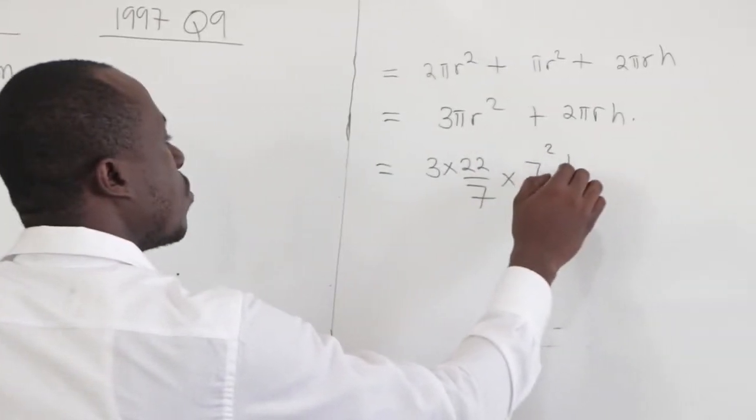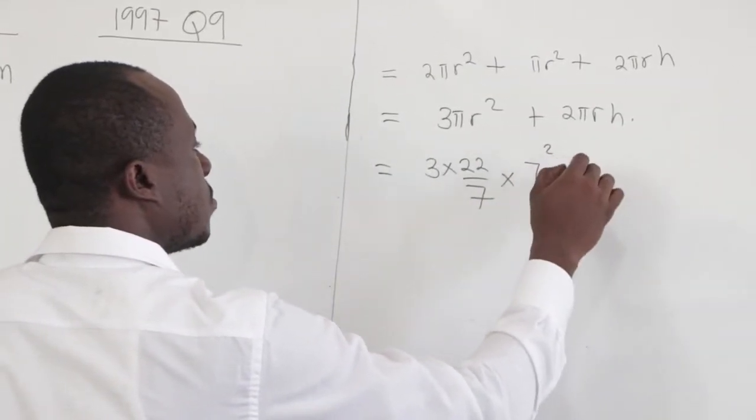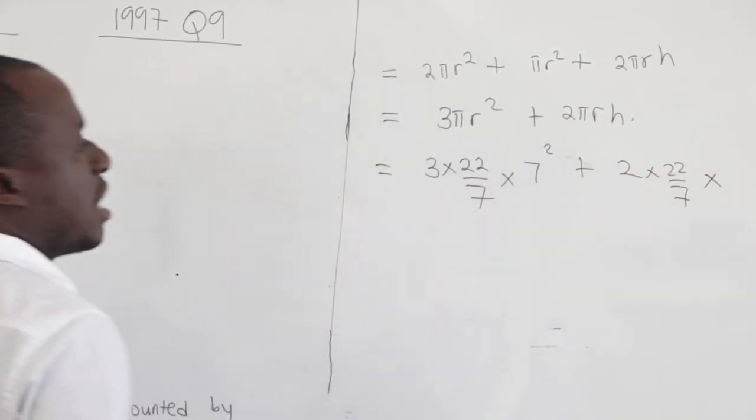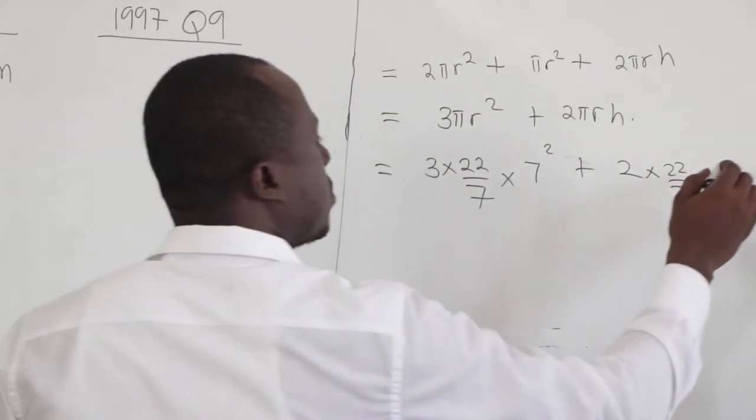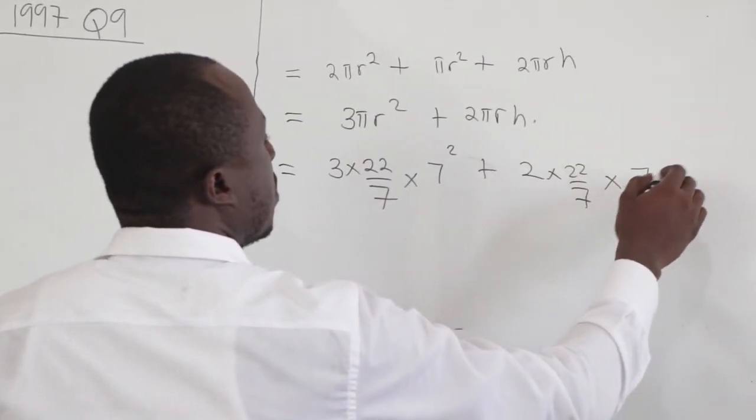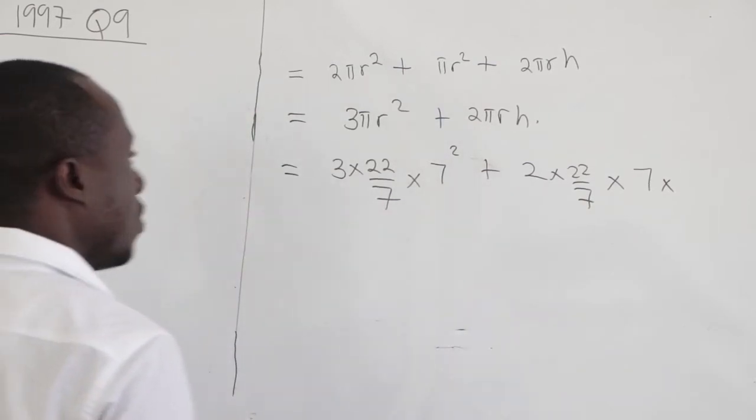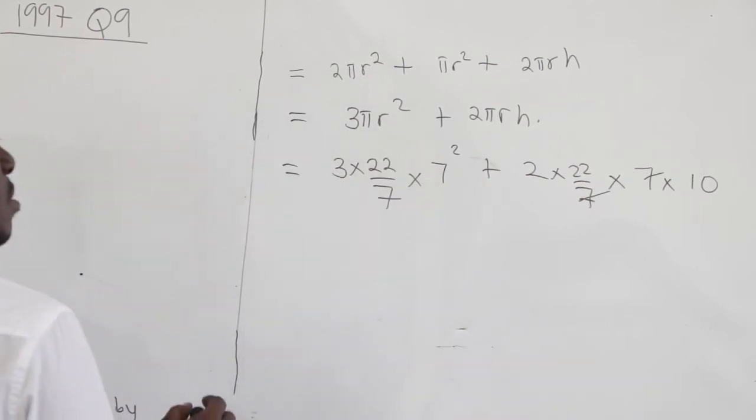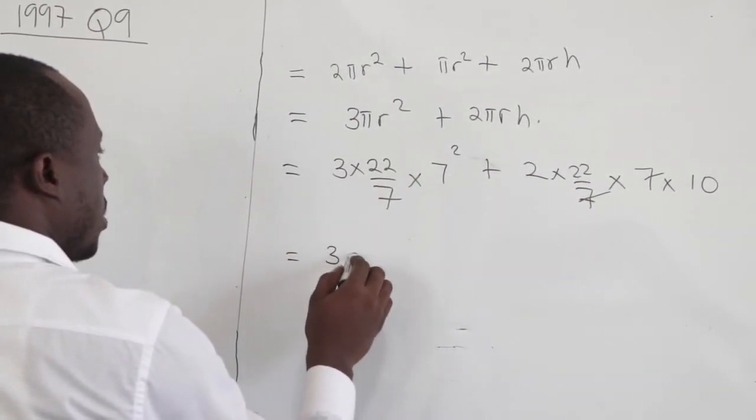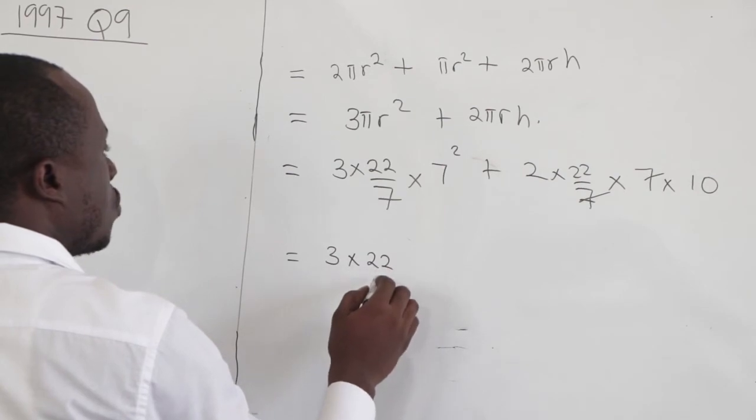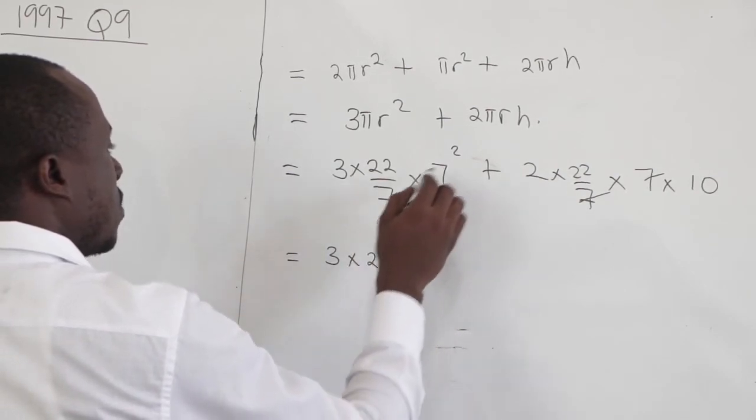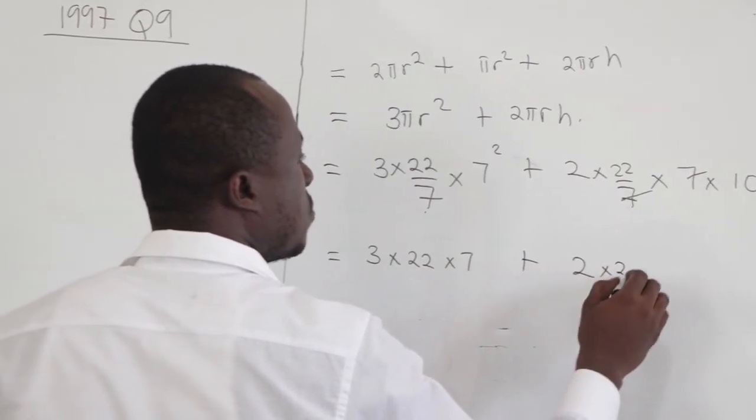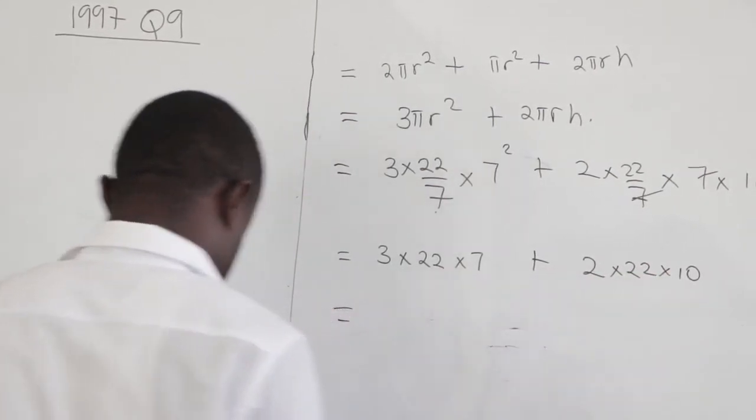So here, we can see times 7 squared plus 2. What is our pi? 22 over 7. What is our radius? The radius is 7. And then, what is the height? The height of the cylinder is 10. Clearly, this 7 will cancel that 7. So we have 3 times 22 times 7, because this 7 will cancel one of the 7, then plus 2 times 22 times 10.